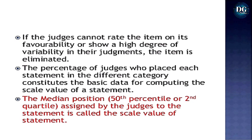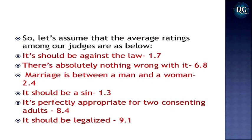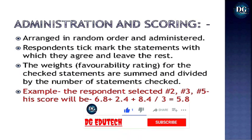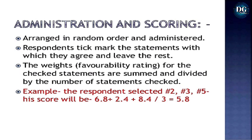The median position assigned by judges to a statement is called the scale value of that statement. For example, assuming average ratings: 'It should be against the law' = 1.7, 'There is absolutely nothing wrong with it' = 6.8, 'It should be legalized' = 9.1. For administration and scoring, statements are arranged in random order; respondents mark statements they agree with, and the weights for checked statements are summed and divided by the number of statements checked.